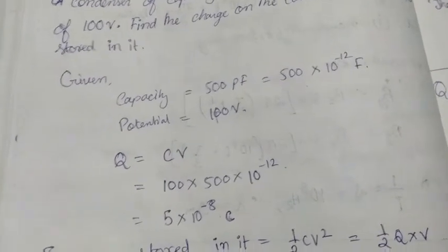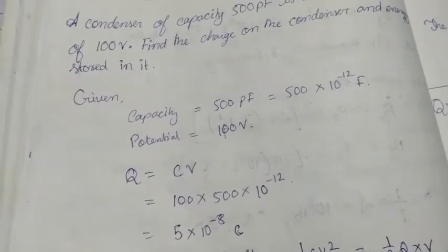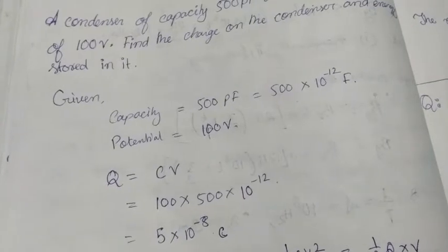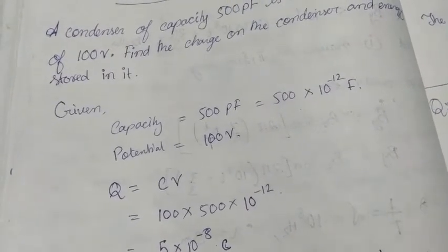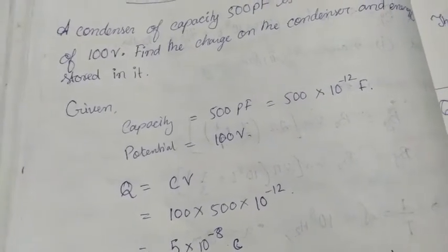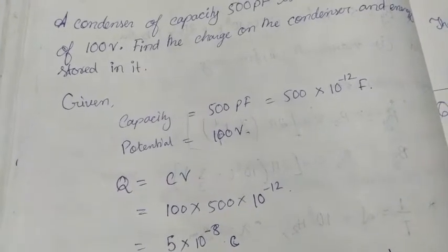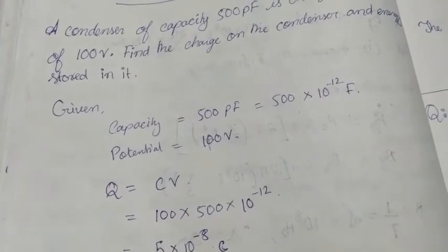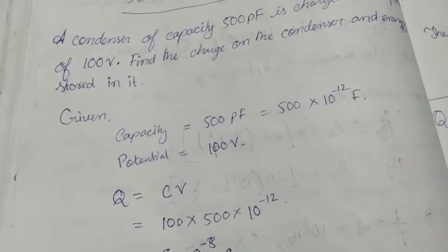Now given that the capacity is equal to 500 pF. 500 pF, I will convert to 10 to the power minus 12, so I will multiply to be 500 times 10 to the power minus 12 F. So it will be the capacity, and the potential is 100 V.